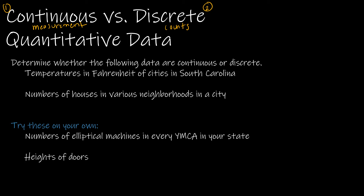For the first practice question, temperatures in Fahrenheit of cities in South Carolina — that is a measurement, we're measuring a temperature, so that is continuous. For the number of houses in various neighborhoods in a city, we are counting the number, so that is discrete. The number of elliptical machines at every YMCA in your state — again, we are counting the number, so that is discrete. Heights of doors — we are measuring the heights, so that is continuous.